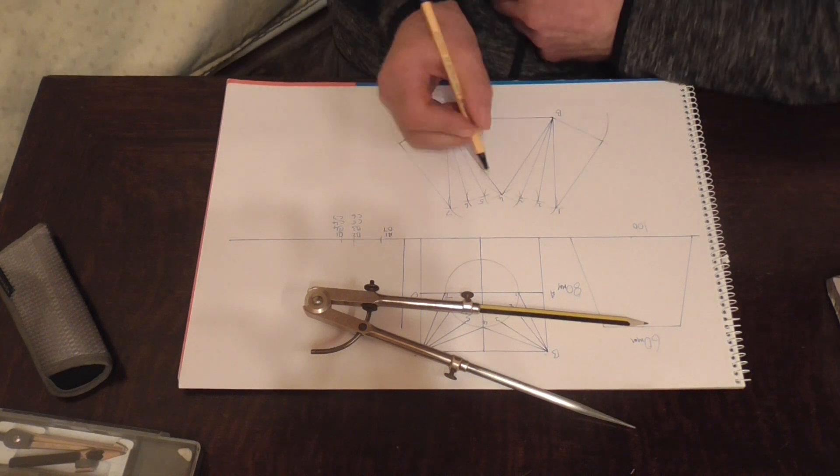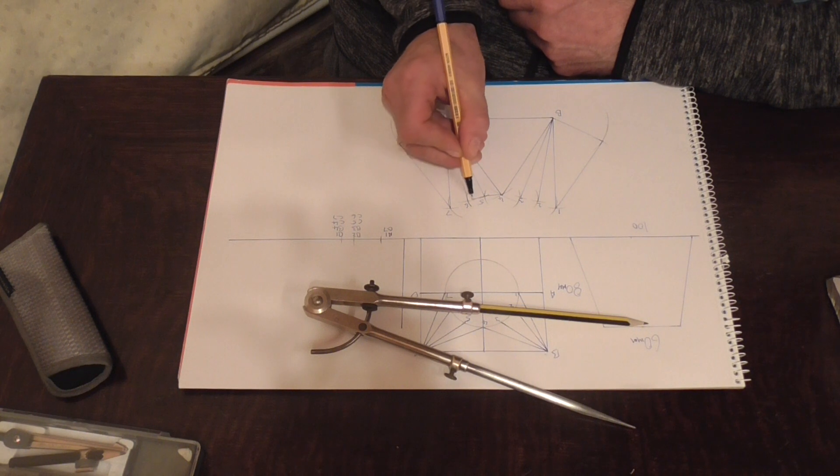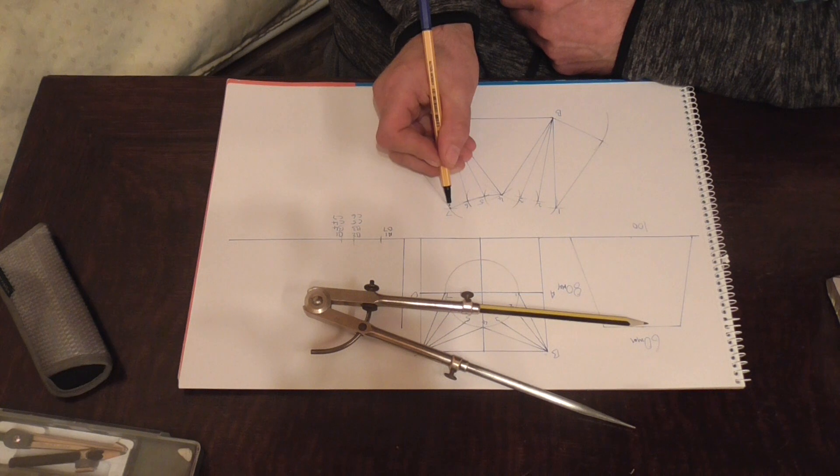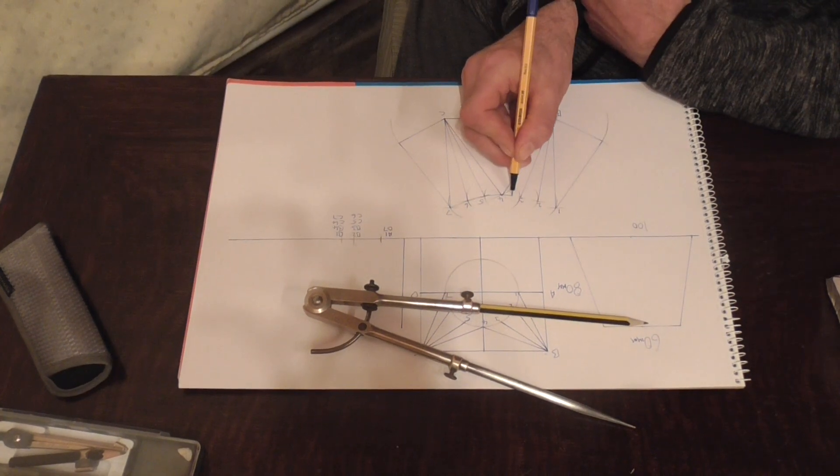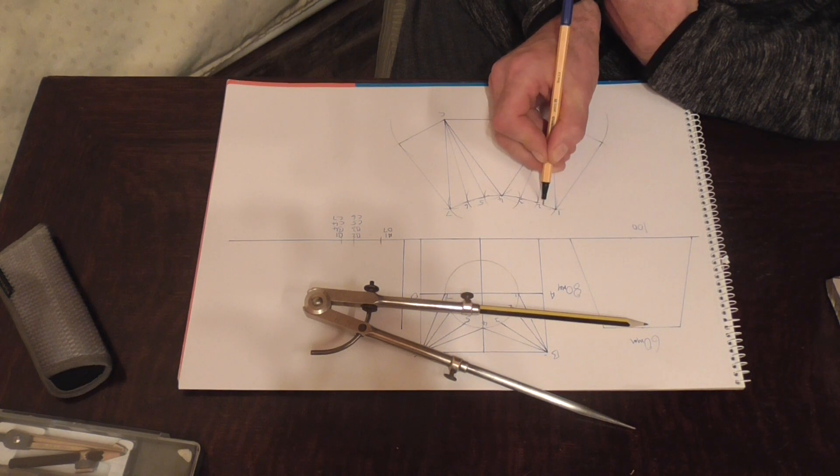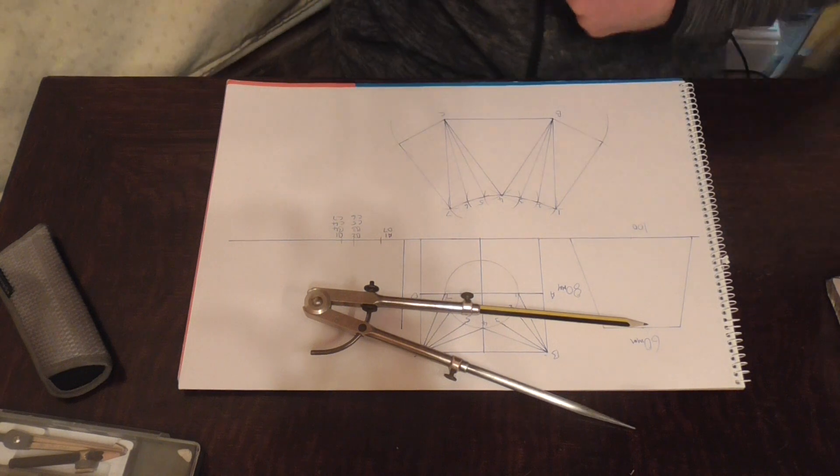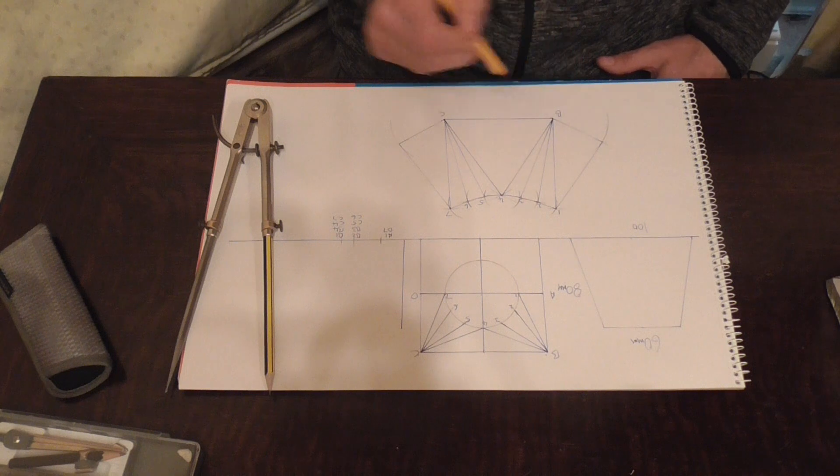So we just draw the tops in and the same this way. So there we have it, there's half of our square to round there.